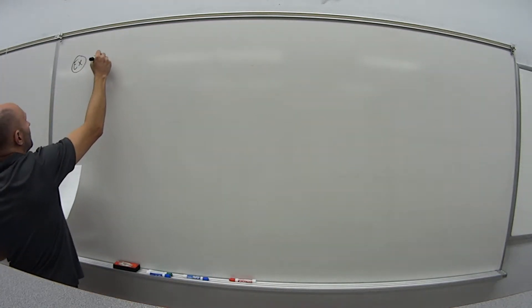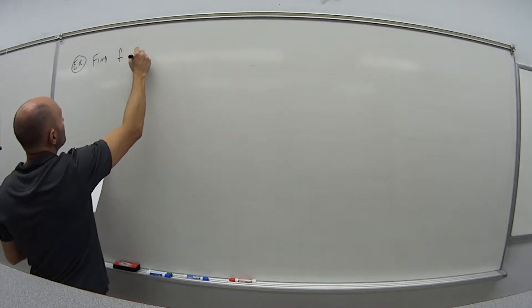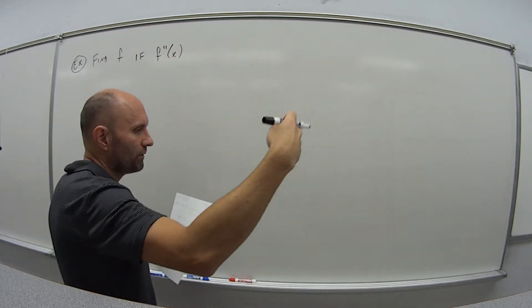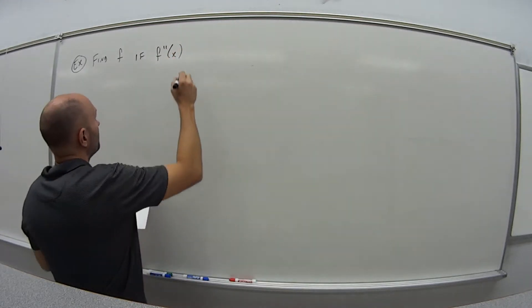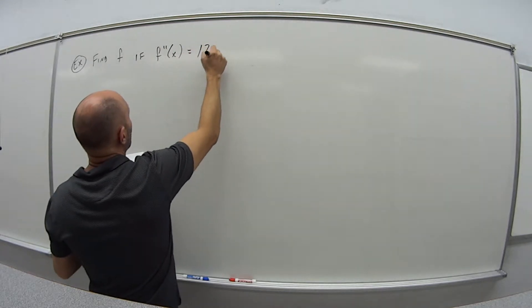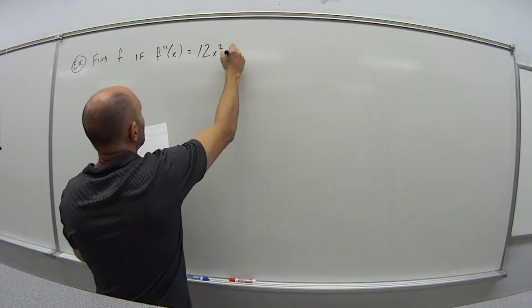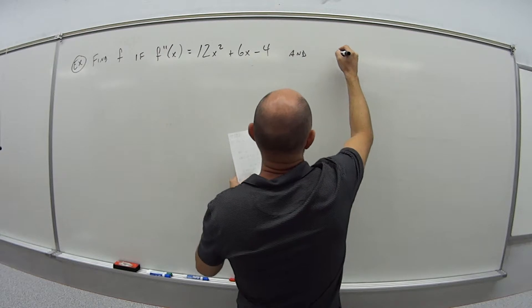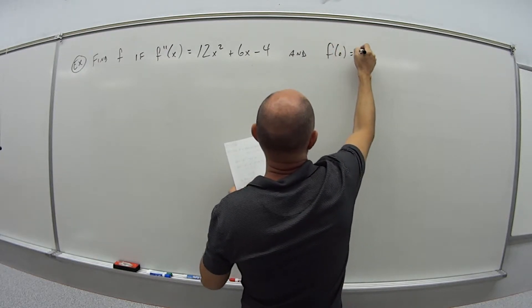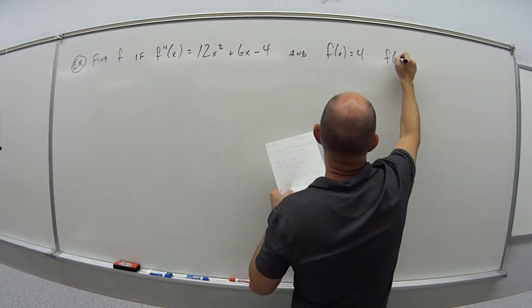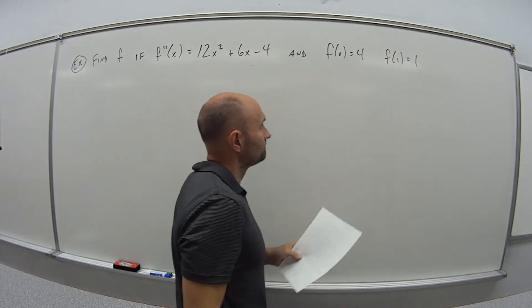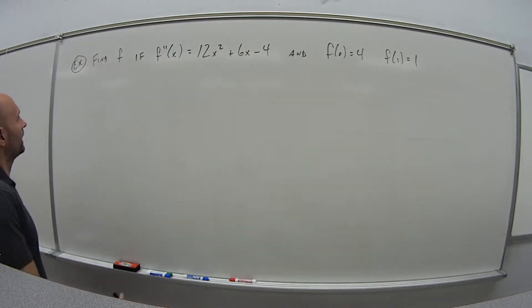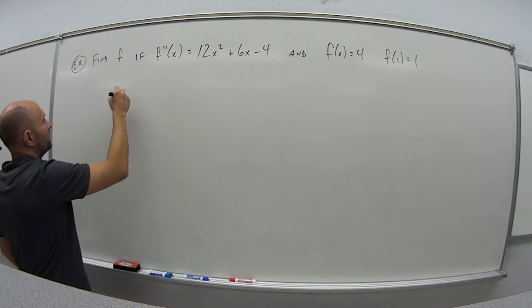Alright. So in this example, we want to find f if f double prime of x, so they've taken the derivative twice. So f double prime of x is equal to 12x squared plus 6x minus 4. And f of 0 is 4. f of 1 is 1.